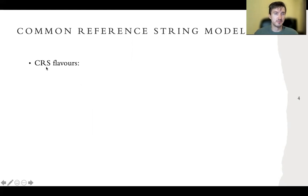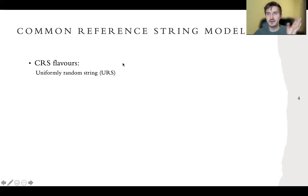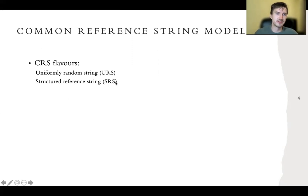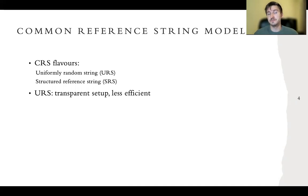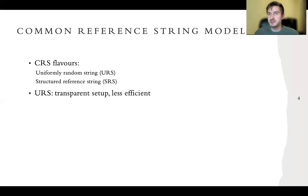There are essentially two flavors of the common reference string. There are uniformly random strings, which are completely uniformly random bit strings, or there are structured reference strings, which is anything besides the uniformly random string. A uniformly random string we sometimes call a transparent setup, because it's relatively easy to obtain from some natural resources — you can obtain it by, for example, picking certain digits of pi or some other natural source of randomness.